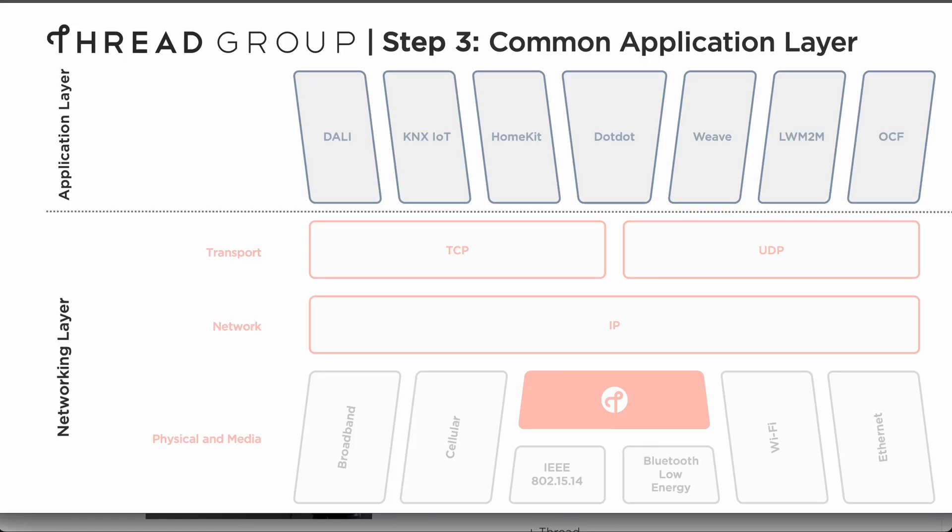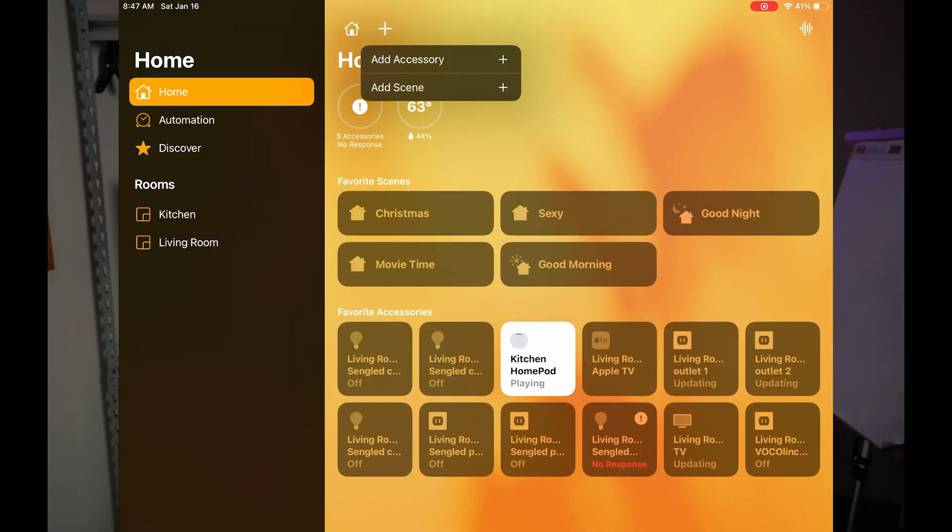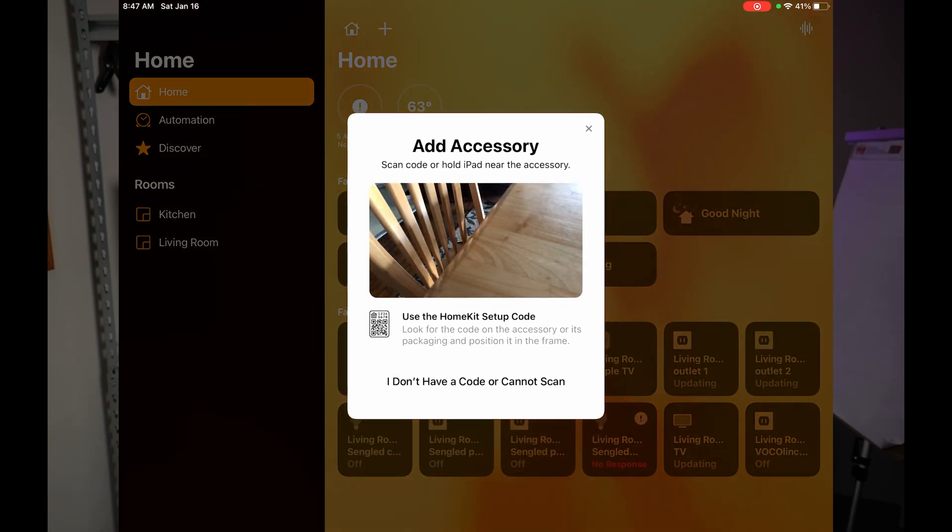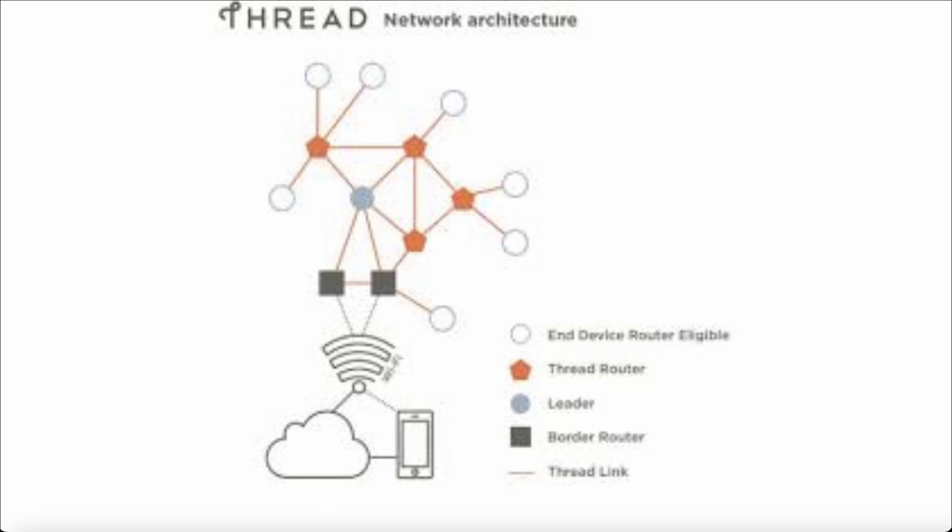Zigbee and Thread cover the same territory — they both cover the networking layer of our devices. Thread, though, is missing the application layer that Zigbee has, so Thread is application layer agnostic, meaning a company can use any application it wants to control the Thread device. Other differences are that Thread uses QR code scanning on a smartphone for pairing, whereas Zigbee is proximity-based. Security on a Zigbee device is AES-128 at the network level, but on Thread, security is AES-128 at the MAC level. Mesh management is self-selection and self-healing in Thread, whereas in Zigbee it's centralized.